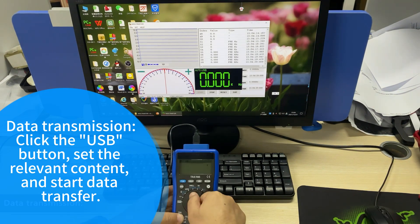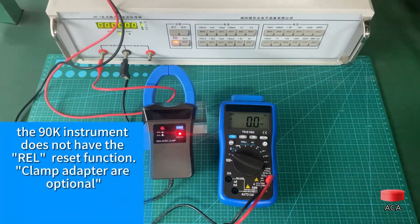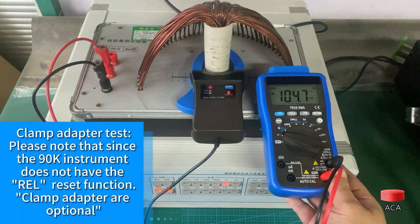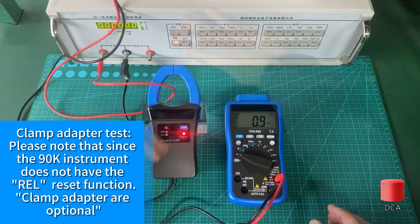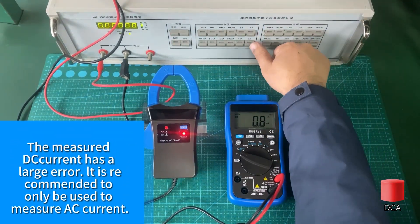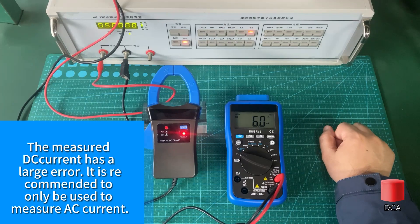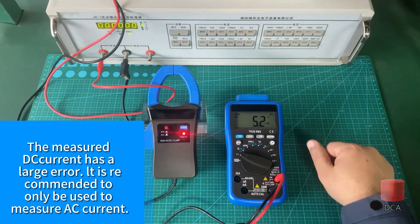Clamp adapter test: please note that since the 90K instrument does not have the REL reset function, clamp adapters are optional. Measured DC current has large error. It is recommended to only be used to measure AC current.